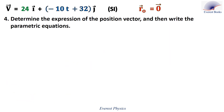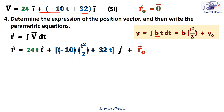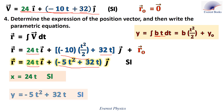Number four: determine the expression of the position vector and the parametric equations. The position vector is the antiderivative of the velocity vector with respect to time. Since 24 is constant, its antiderivative is 24t. The antiderivative of minus 10t is minus 10t² over 2, and the antiderivative of 32 is 32t. Rearranging, since r equals xi plus yj, we get x equals 24t and y equals minus 5t² plus 32t. These are the parametric equations.